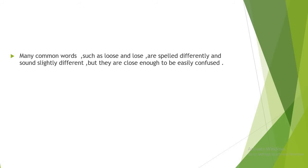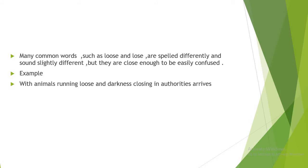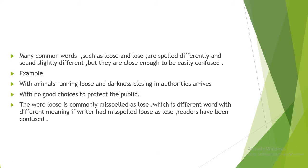We have many common confusing words, such as 'loose' and 'lose,' which are spelled differently and sound slightly different, but they are close enough to be confused. For example, look at this: 'animals running loose.' The word 'loose' is commonly misspelled as 'lose,' which is a different word with a different meaning. If a writer misspells 'loose' as 'lose,' readers will be confused.